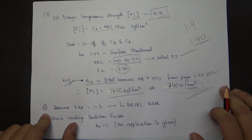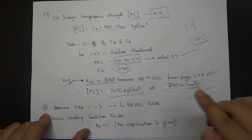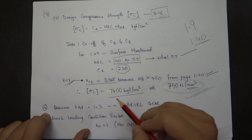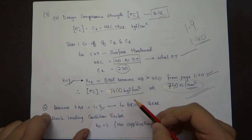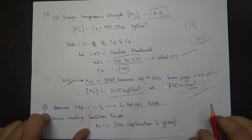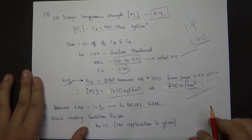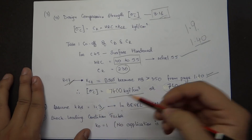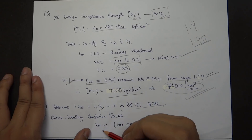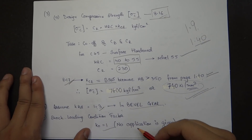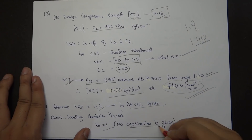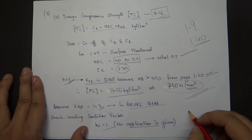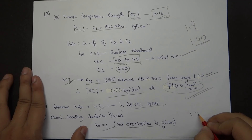The fourth step is the assumption of K_KD, which is always 1.3 for bevel gears. The fifth step is the shock loading condition factor K_0, which is 1 because no specific application is given. If an application were given, it could be taken as 1.5.